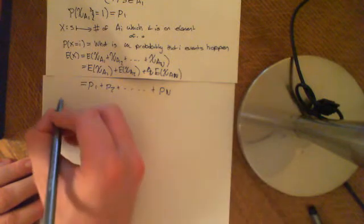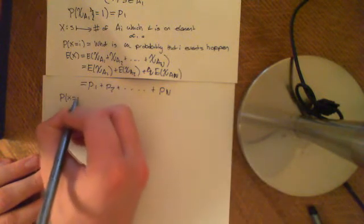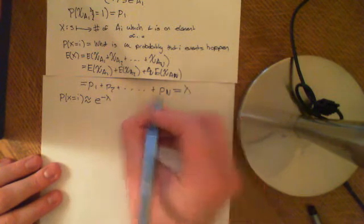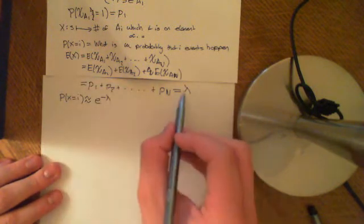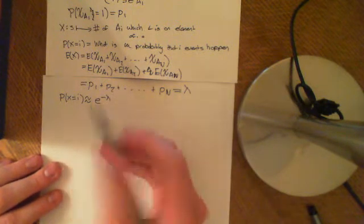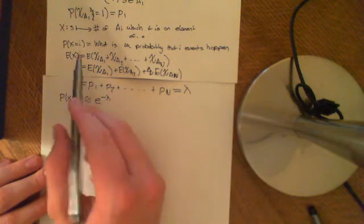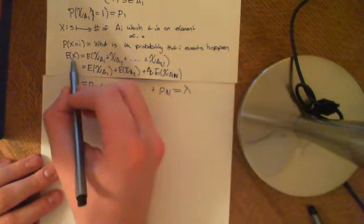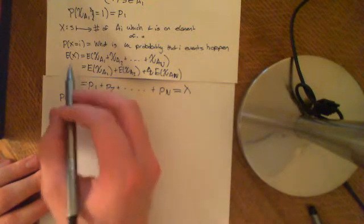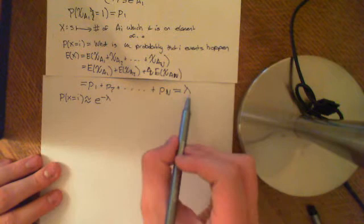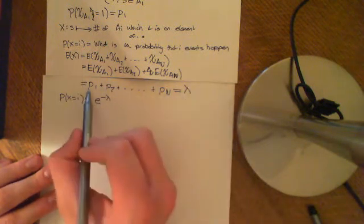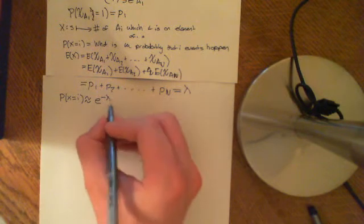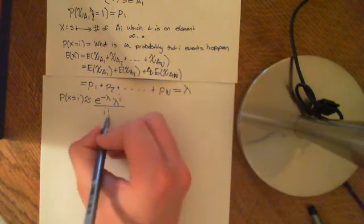So the Poisson paradigm is that the probability that X equals i is approximately equal to e^{-λ} · λ^i / i!, where I define this expectation value to be λ — the expectation value of the random variable X equals λ. Remember, the expectation value of a Poisson distribution is λ. So it makes sense to approximate X with a Poisson distribution that has the same expected value. We set the expected value of our approximating Poisson distribution equal to that, and we get λ^i over i factorial. And that is the Poisson paradigm.